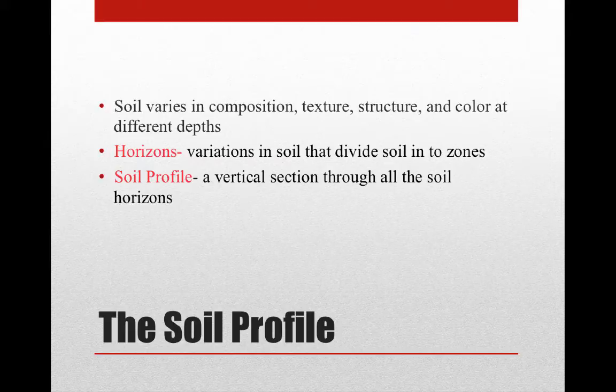When we were on our little hike down by the river, that top layer of soil by the river was a lot finer sand than if we dug down. When we dug down we got a lot of gravel and rocks and things like that. Our horizons are the variation in soil that divides soil into zones, and we have three main horizons: A, B, and C.